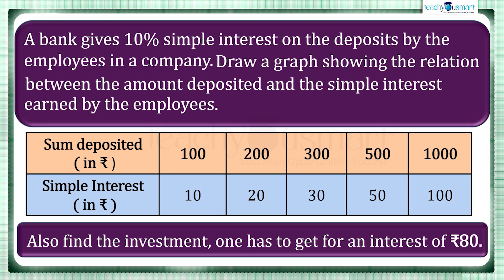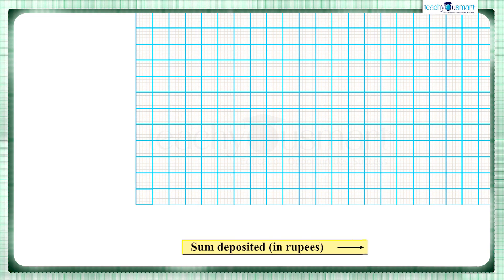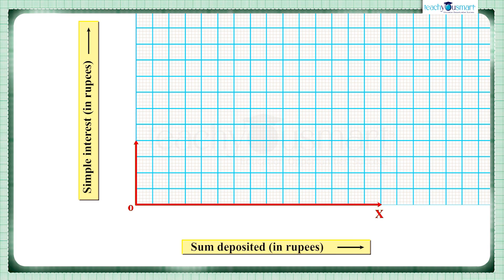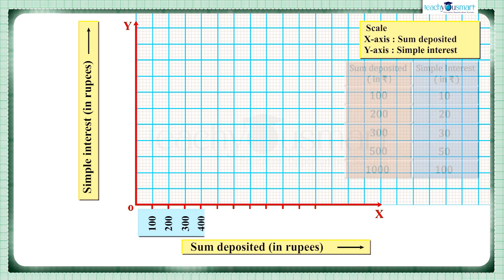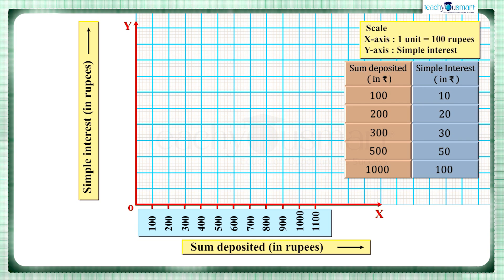Here we can see that as the deposited sum increases, the simple interest also increases — that is, they are in direct variation. So we can say that the graph of this information is a linear graph. We take the sum deposited on the x-axis and simple interest on the y-axis, and we choose the scale as: on the x-axis, one unit equals 100 rupees, and on the y-axis, one unit equals 10 rupees.